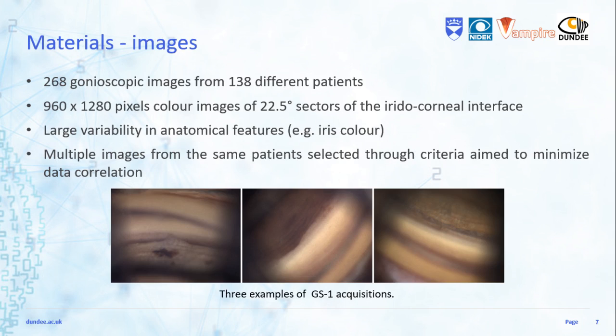Our dataset consists of 268 images from 138 different patients. Every color image has a resolution of 960 by 1280 pixels and covers a 22.5-degree sector of the interface. We built the dataset to account for the large variability of anatomical features, such as the iris color, the trabecular meshwork pigmentation, etc. Pathological cases are underrepresented due to the limited availability of exams to choose from.